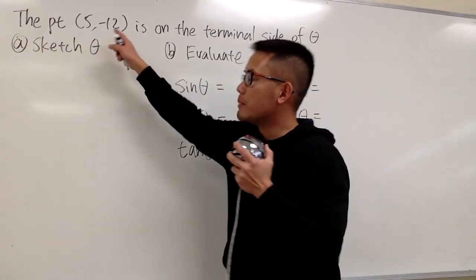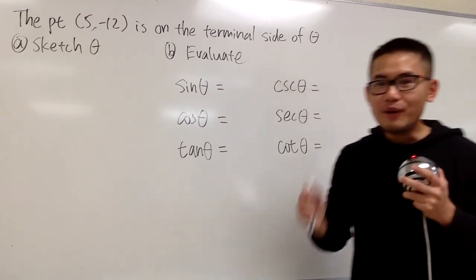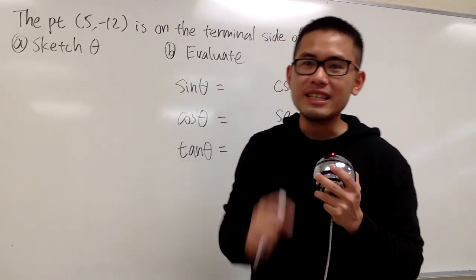Okay, we are given a point, 5 comma negative 12, and we know that point is on the terminal side of the angle theta. First, we are going to make a sketch of the angle theta. Of course, theta should be in the standard position.